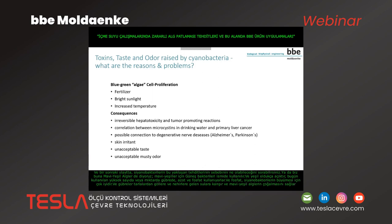Another important factor is bright sunlight. When the sun comes up in summertime it gets warmer, and cyanobacteria like to stay at the surface to use this light for photosynthesis and for their growth. The increased temperature, which may also be caused by global warming, will help them to grow much better.